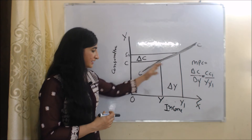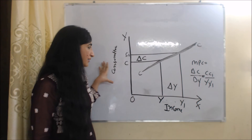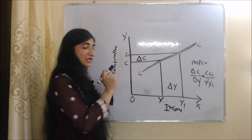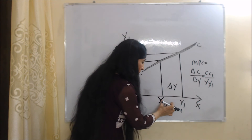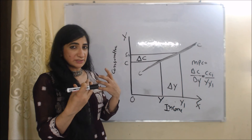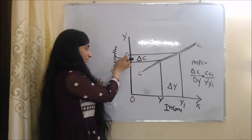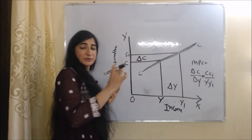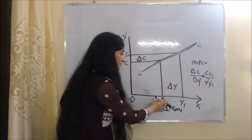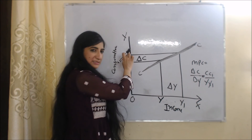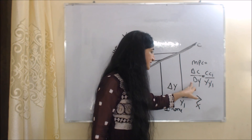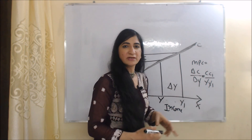Now we will see the diagram of MPC. On the X-axis we have income and on the Y-axis we have consumption. Initially, our income is OY and our consumption is OC. Our income increases from OY to OY1, so YY1 is the change in income. Because of this increase in income, our consumption also increases from OC to OC1, and CC1 shows the change in consumption. MPC tells us how much consumption changed when income changed: change in consumption is CC1 and change in income is YY1, so MPC equals CC1 over YY1.